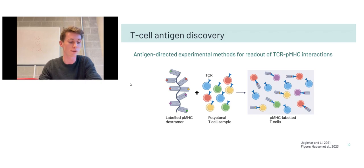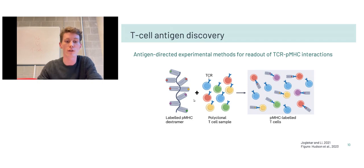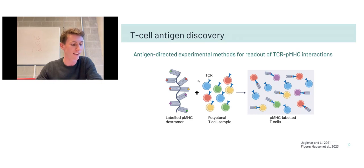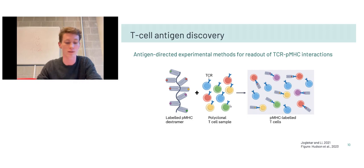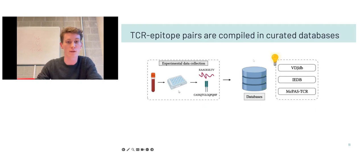For antigen-directed methods, there are functional screening methods using stimulation and activation markers with a specific peptide or peptide pool. There are also peptide-MHC multimer staining methods — seminal work from labs of Mark Davis and Paul Thomas demonstrated this is a powerful methodology. Labeled TCR-MHC multimers such as tetramers or dextramers are added to your T-cell sample; if they bind, you can use fluorophore-labeled dextramers with FACS to sort reactive T-cells and sequence them to know the exact TCRs. These TCR-epitope pairs are then stored in curated databases.